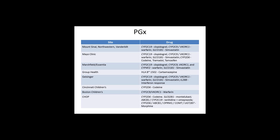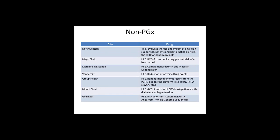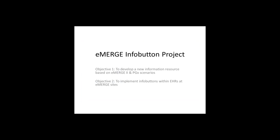This is a list of the different variants that are being returned across the sites. We've seen this before, so I'm not going to go through it. But we also have some non-PGX initiatives that I'll just project here briefly. All of these are, to one degree or another, using the electronic health record as a way to provide appropriate notification and support to clinicians to utilize the information.